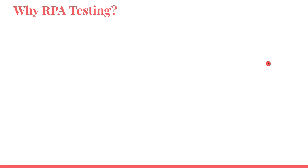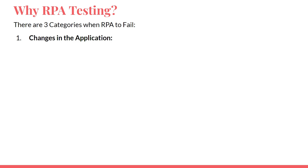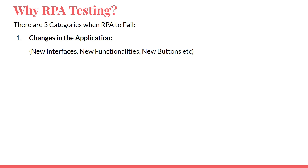Now why do you have to do RPA testing? Once you have built your RPA project there are three categories of problems that might appear. The very first category is changes in the application. If you developed on version one of the application and tomorrow they release a newer version, your RPA will not work — there is a new interface, new functionalities, new buttons. Your RPA will definitely fail because you designed it on the older version.